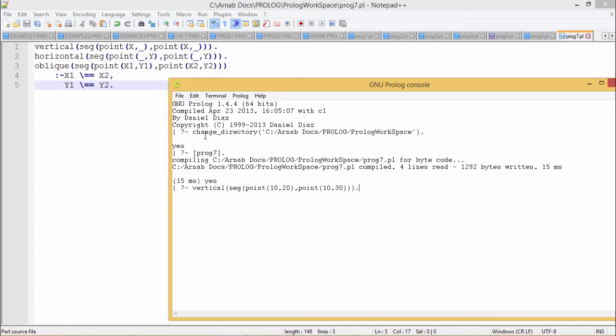Now here we have done the change directory accordingly, and also we have loaded this program, we have compiled it. Now vertical segment point 10 comma 20, comma point 10 comma 30. Here x1 and x2, these two values are same. Here we have used the clause that is the vertical. Vertical means x values must remain same, and we have provided the input accordingly.